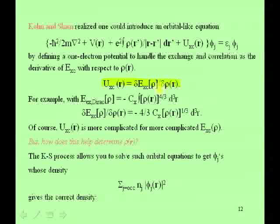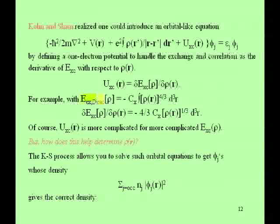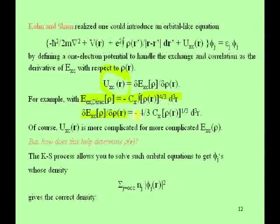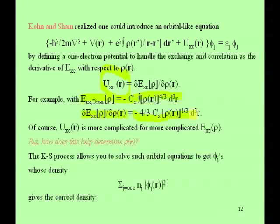For example, if you take the Dirac expression for exchange — minus C_x times the integral of rho^(4/3) d³r — then the contribution to U_xc from that piece is just the derivative with respect to rho: minus (4/3) C_x times rho^(1/3). Just as taking the derivative of something to the 4/3 power gives 4/3 times that something to the 4/3 minus 1. So they have a prescription for calculating contributions to the exchange-correlation potential.